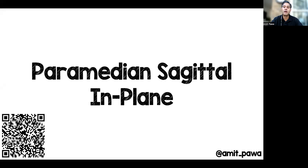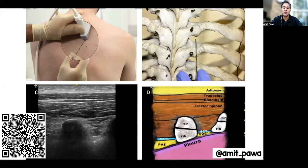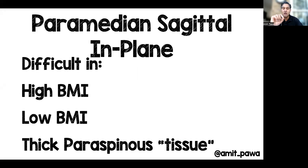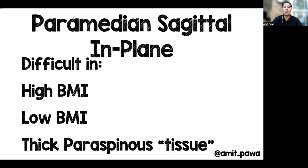For the paramedian sagittal in-plane approach, the needle takes its route — you can see on the skeleton — coming in over the transverse process at the caudal aspect and aiming to place that needle into the local anaesthetic target where the paravertebral space is. The paramedian sagittal approach is difficult in patients with either high or low body mass index: high BMI because of the large degree of tissue between skin and target, and low BMI because the inter-transverse process space can be quite narrow.